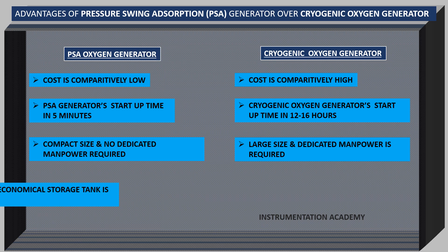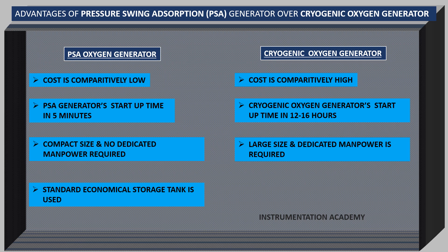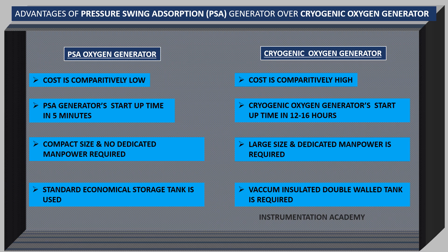PSA oxygen gas can be stored in a standard economical tank whereas cryogenic oxygen is to be stored in a vacuum insulated double-walled tank. Cost of this storage tank is therefore high. Considering all these advantages, we can say that PSA oxygen generators are best suited for medical oxygen generation in hospitals.